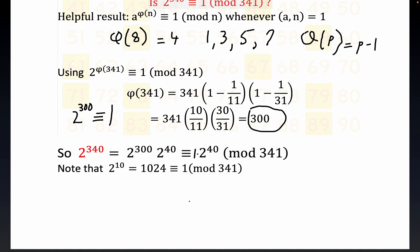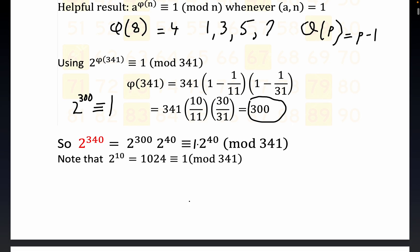Now another very useful truth here is that 2 to the 10th, which is equal to 1024, is congruent to 1 mod 341. You can do that division, but if you divide 1024 by 341, you get a remainder of 1.